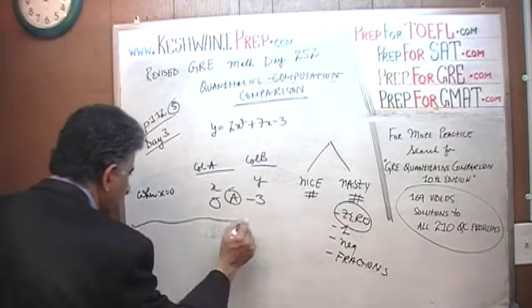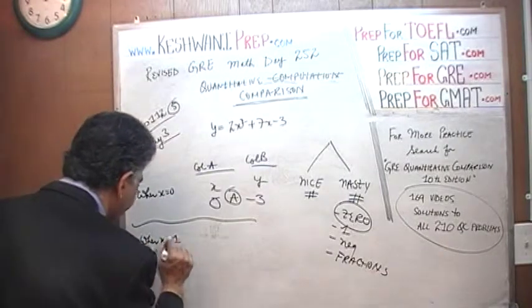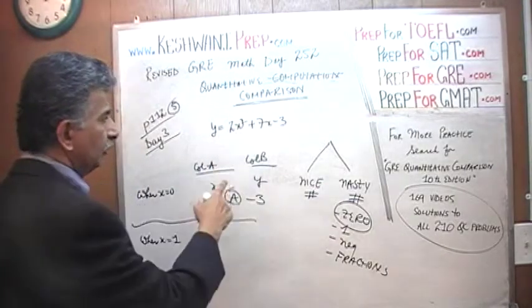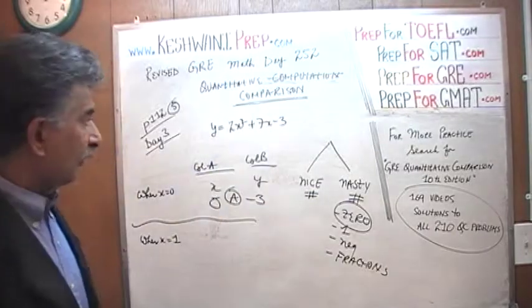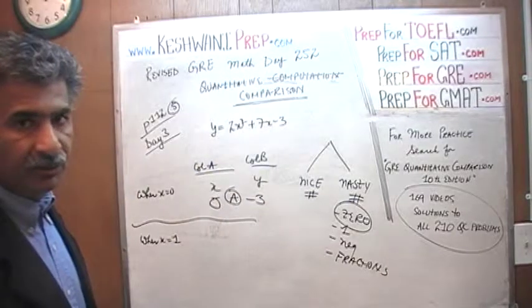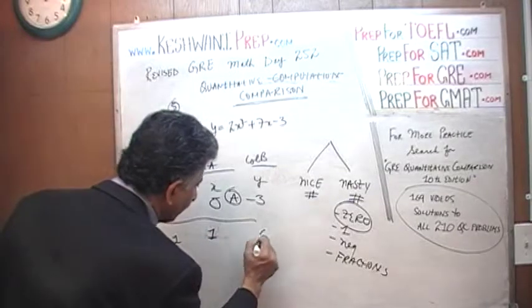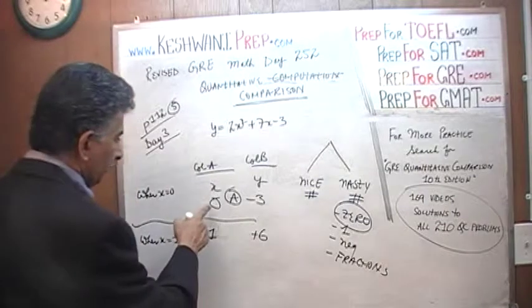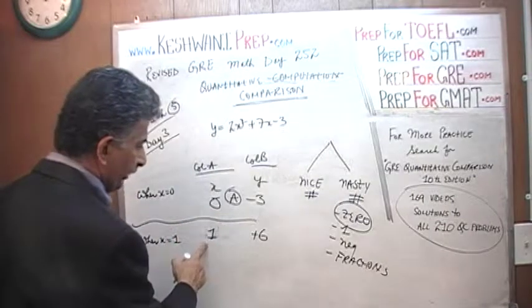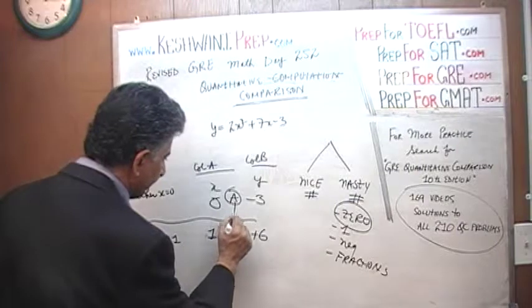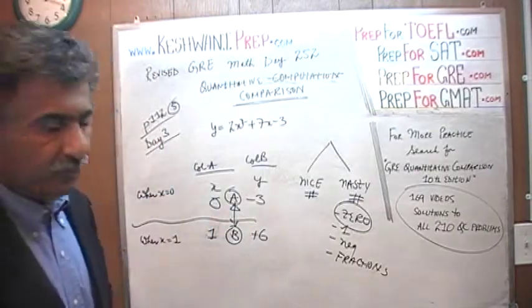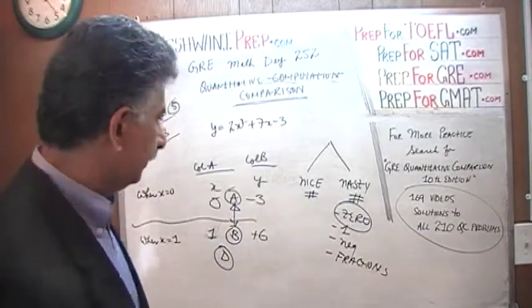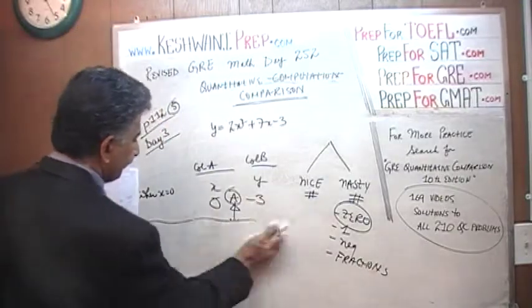Let's plug in the next value — let's pretend x is equal to one. If x equals one, then one squared is one, times two is two; seven times one is seven; two plus seven is nine, minus three is six. So when x is one, y is positive six. Now the answer switched: before it was zero versus negative three, now it is one versus positive six, so the answer is B. Since the answer switches, there is a conflict, and the correct answer is D.